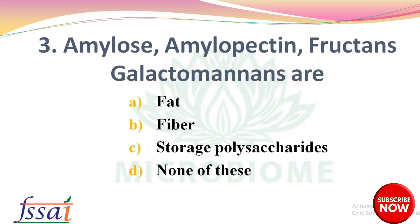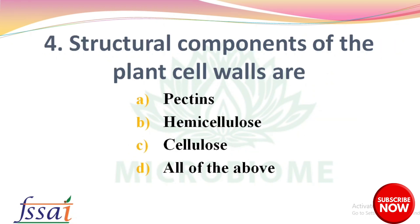Next question: amylose, amylopectin, fructans, and galactomannans — options: fat, fiber, storage polysaccharides, none of these. The right answer is option C, storage polysaccharides. Next, structural components of the plant cell walls are — options: pectins, hemicellulose, cellulose, all of the above. The right answer is option D, all of the above.